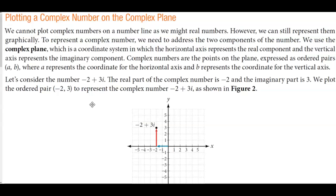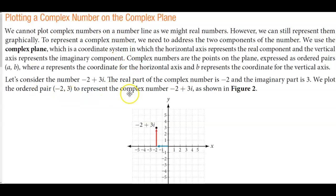Complex numbers are the points on the plane expressed as ordered pairs, where a represents the coordinate for the horizontal axis and b represents the coordinate for the vertical axis. Let's consider the number negative 2 plus 3i. The real part of the complex number is negative 2 and the imaginary part is 3.